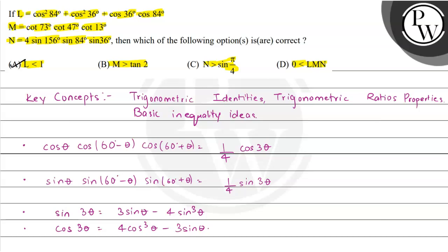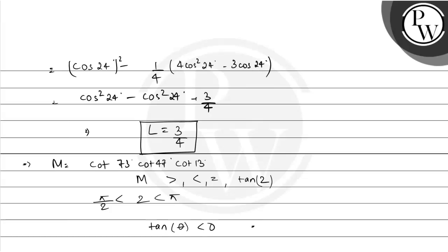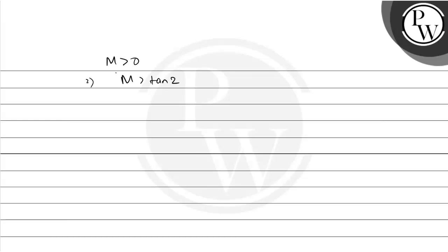Now about M: M was given to be cot of 73 degrees times cot of 47 degrees times cot of 13 degrees, and we had to compare M with tan of 2, where 2 is in radians. Now 2 lies between pi by 2 and pi because pi by 2 is approximately 1.57 and pi is 3.14. We know that if theta belongs to pi by 2 to pi, then tan of theta is less than 0, which implies tan of 2 is less than 0. Whereas cot of 73 degrees, cot of 47 degrees, and cot of 13 degrees are all greater than 0, which implies M is greater than 0. Hence M is greater than tan of 2 because tan of 2 is even less than 0.